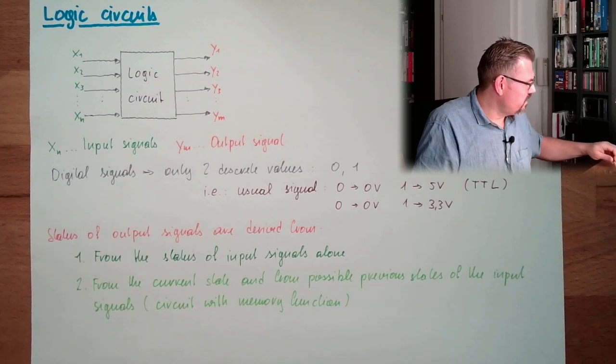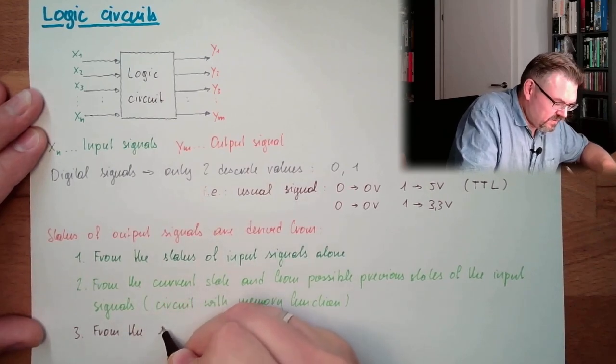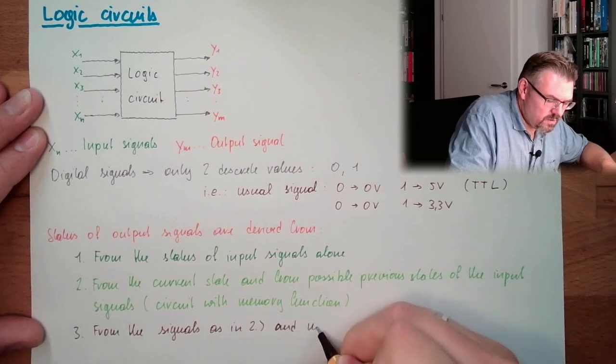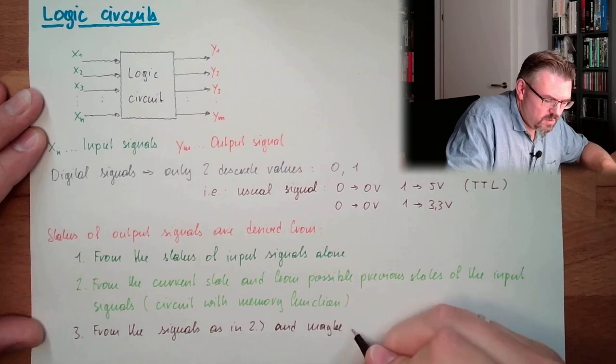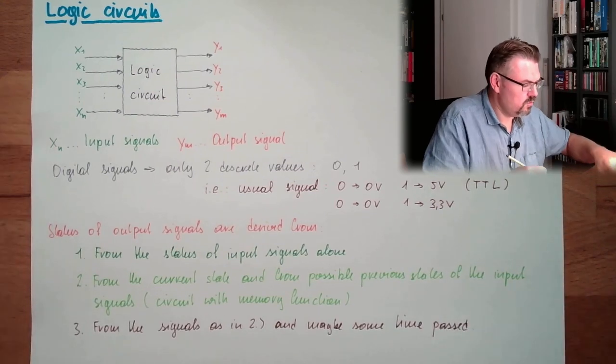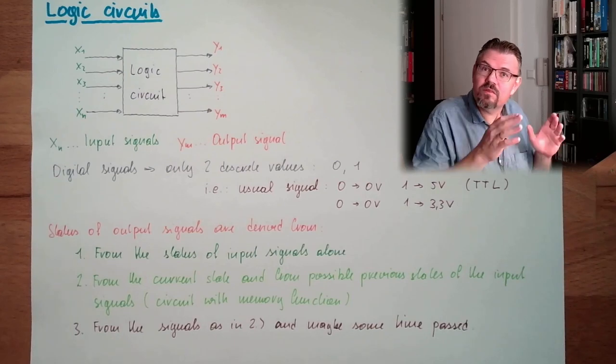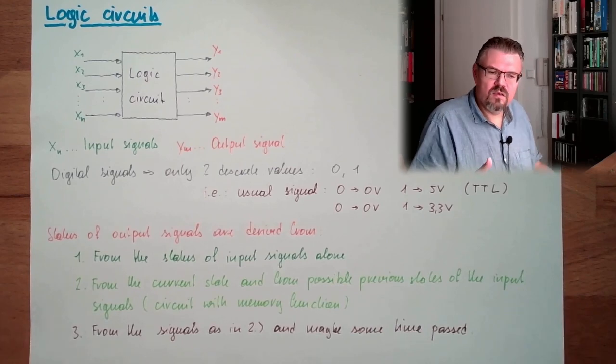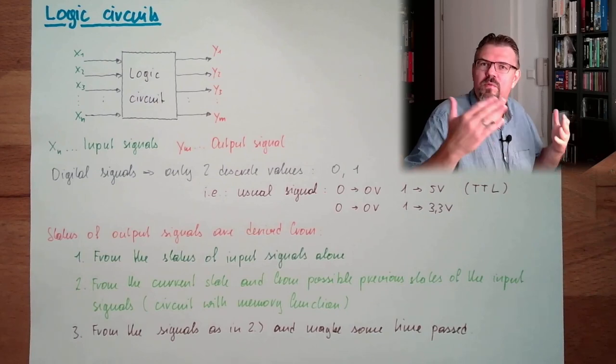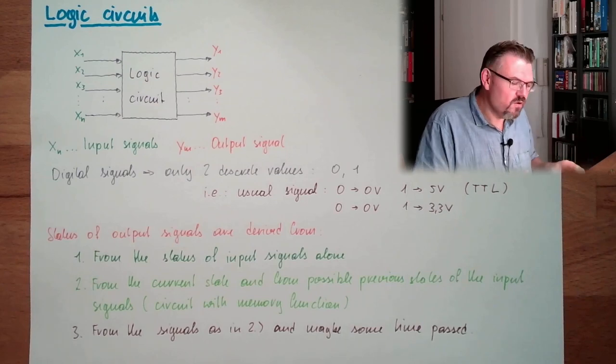And then the third possibility is from the signals as in two, and maybe some time passed. From the signals in two, and there is passing some time. And then suddenly the output is changing without an input signal change. One possibility would be, if you press a button, then the light turns on. And after two minutes, the light turns automatically off. Because it's somewhere at a big building here, at the outer part. There is no signal anymore, and the lights are already turned off. So this is then timing.